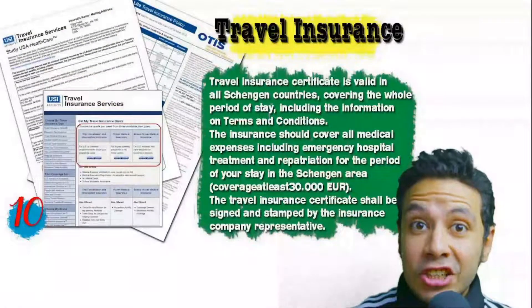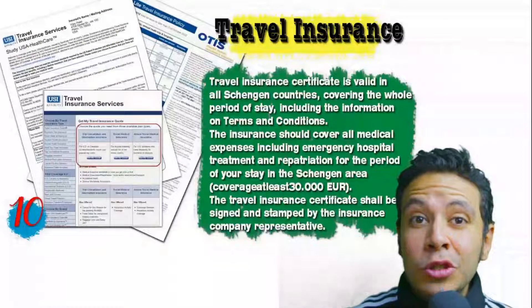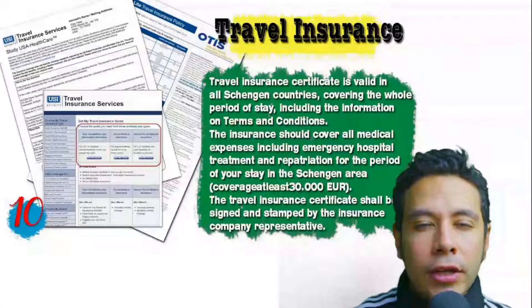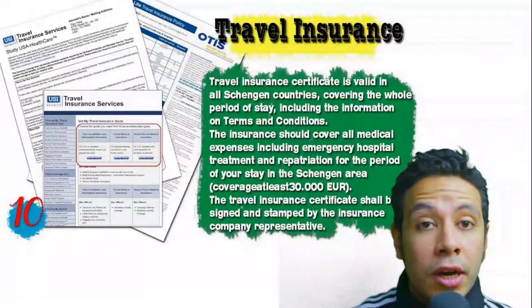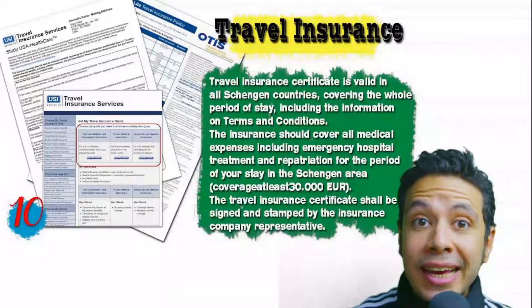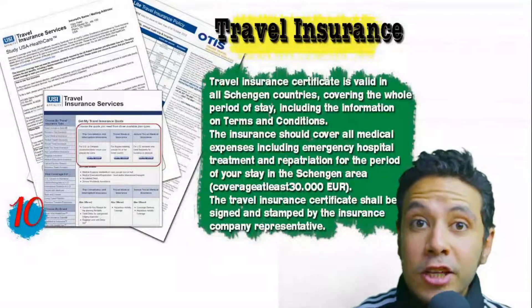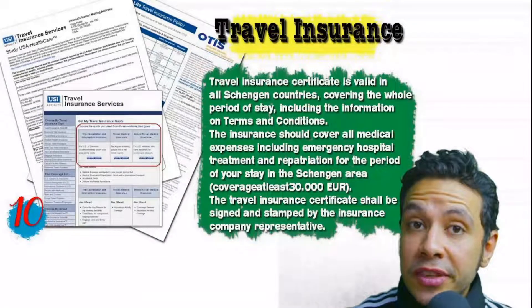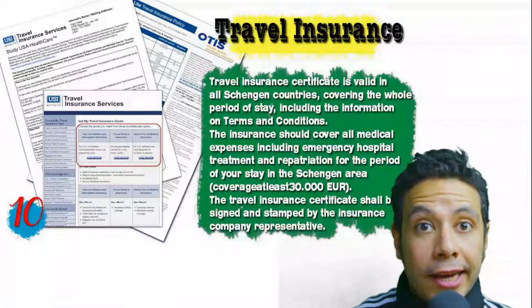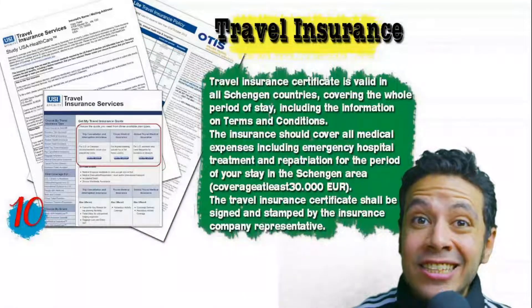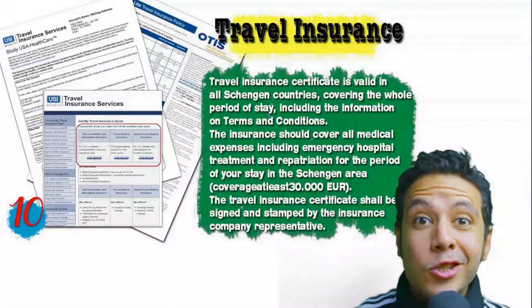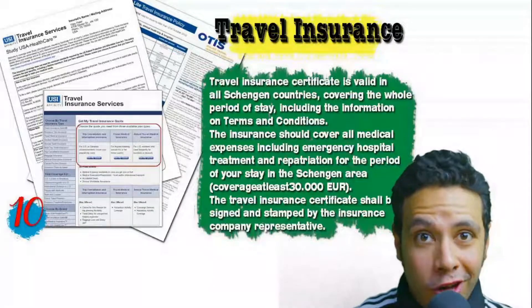Many countries, especially in the Schengen area, require you to provide travel insurance. You need to apply through companies that are officially accepted. For Schengen area countries, the insurance coverage must be at least 30,000 euros. In general, you can apply for this insurance online.